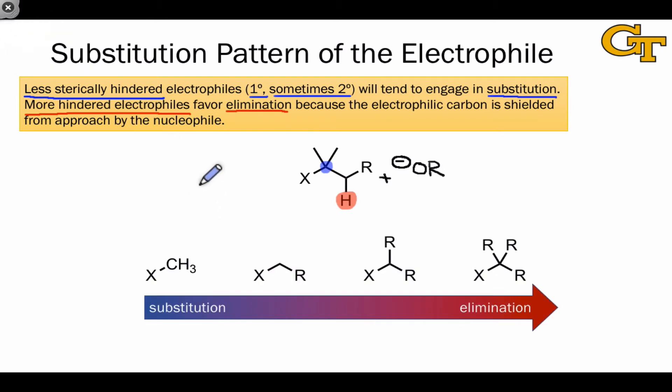Well, one thing to say right off the bat is that if the substrate lacks beta hydrogens, then elimination cannot occur. Methyl substrate is a classic example of that. Methyl halide or pseudohalide. There are no beta hydrogens. The beta atoms are themselves hydrogen. And so without a carbon at the beta position, there's no possibility of elimination.